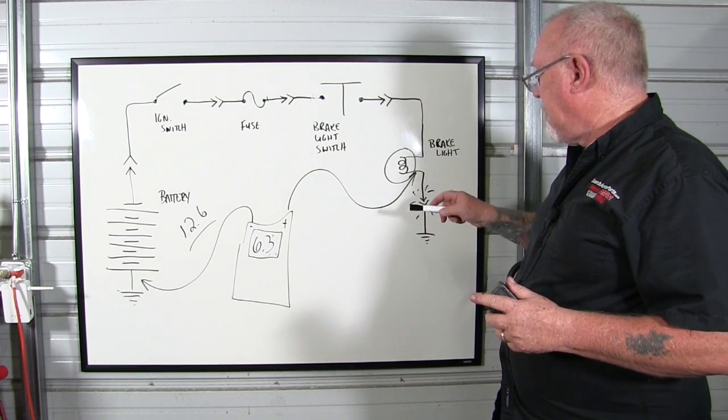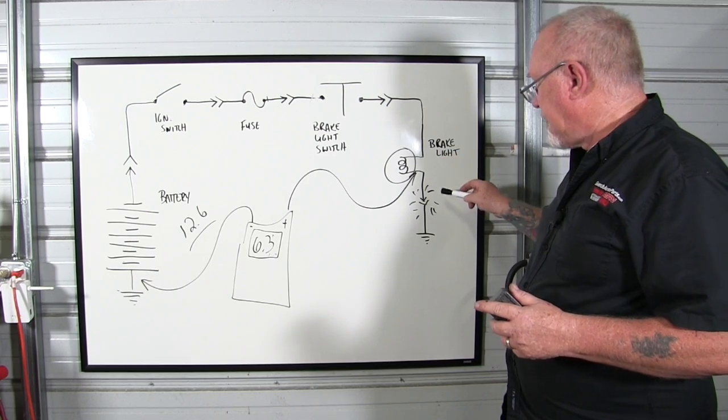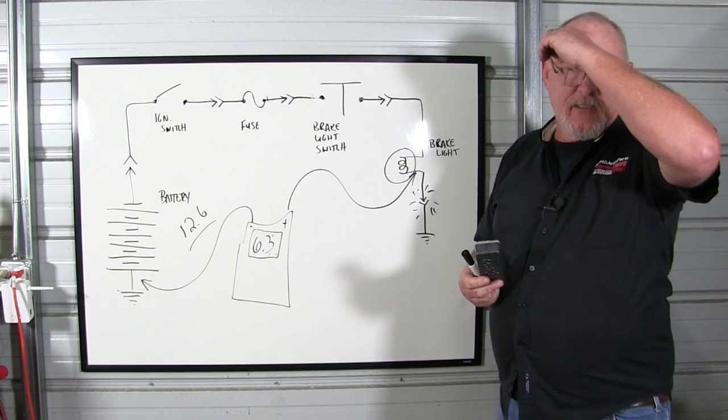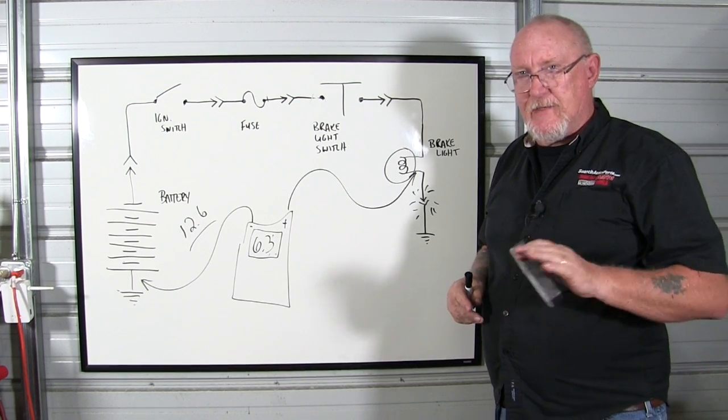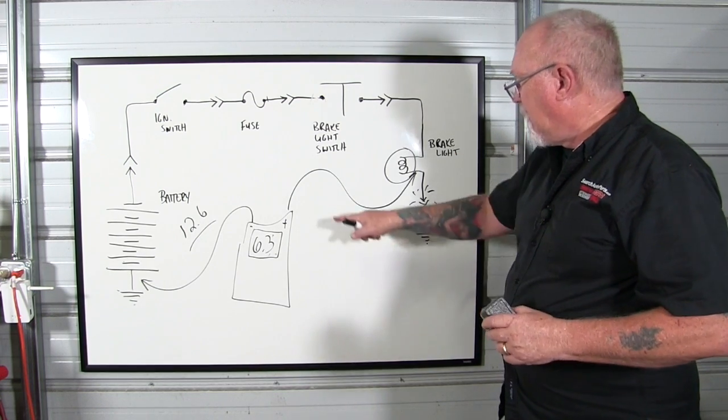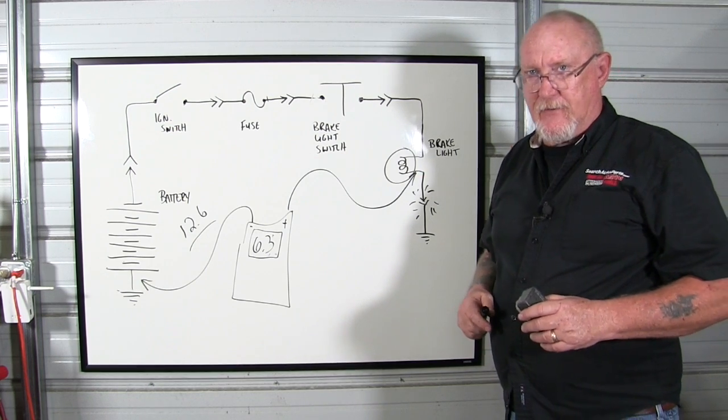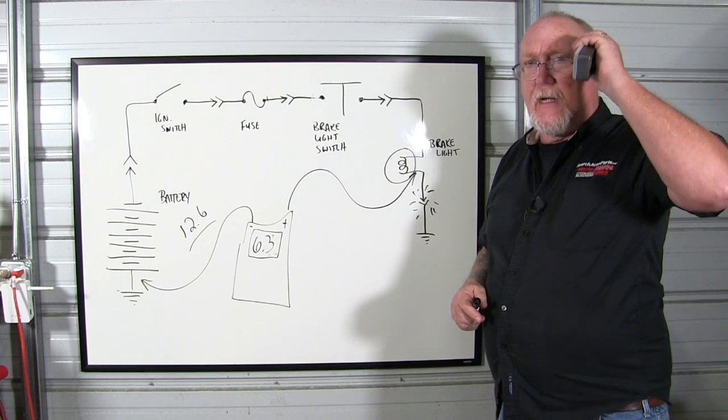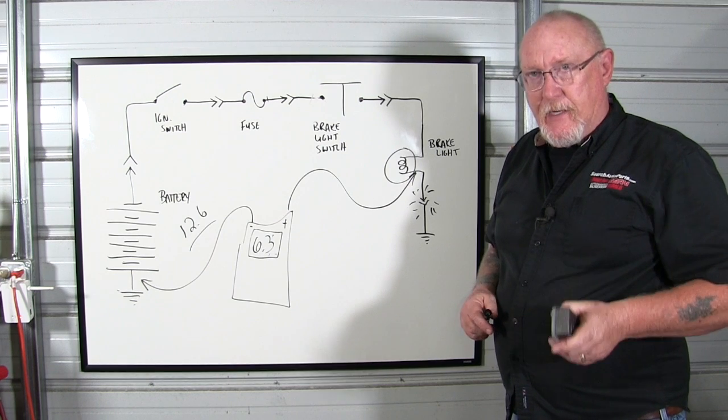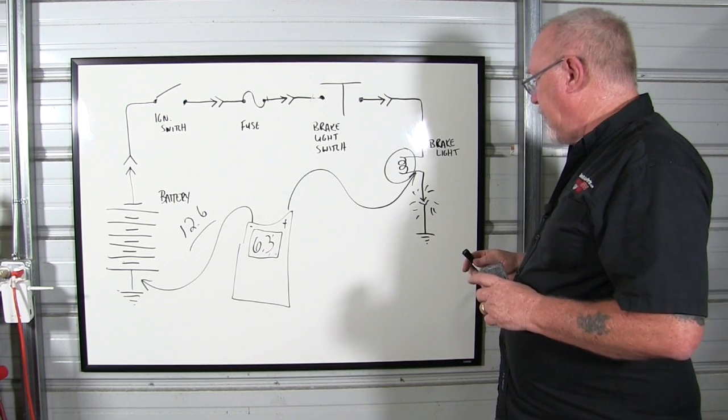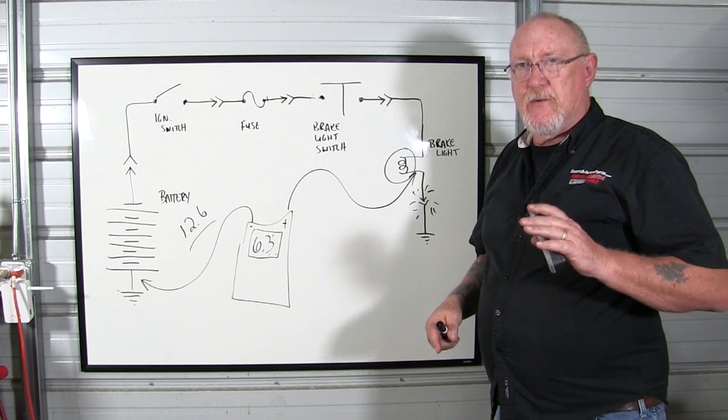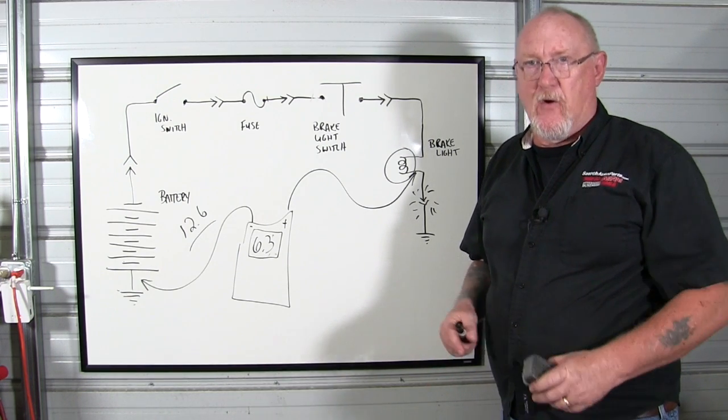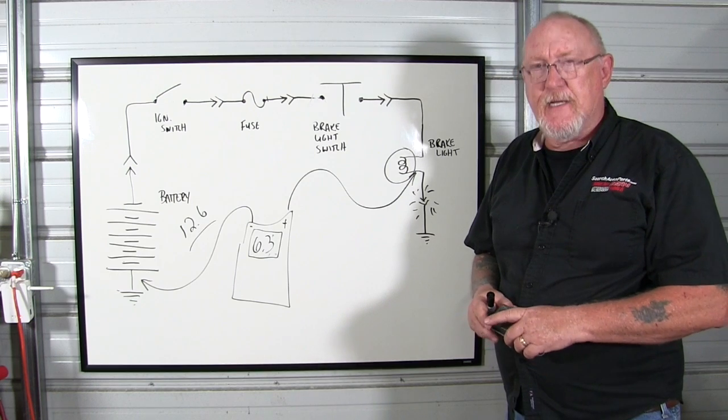And there's a source waiting on the other side. So we're still going to measure that 12.4 going in. That's going to tell us everything up to that point is okay. And then when I move my lead over to the ground side of that connector, the ground side of that load, now I'm going to be measuring how much voltage that second source, that second source of resistance, is waiting on. Does that make more sense?